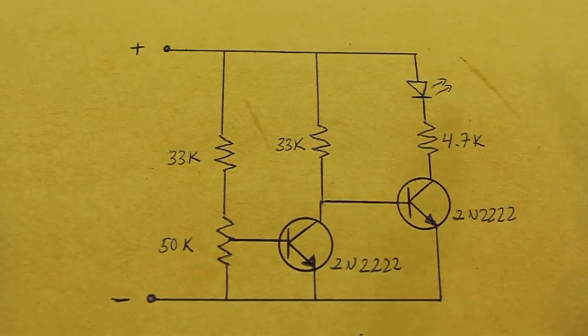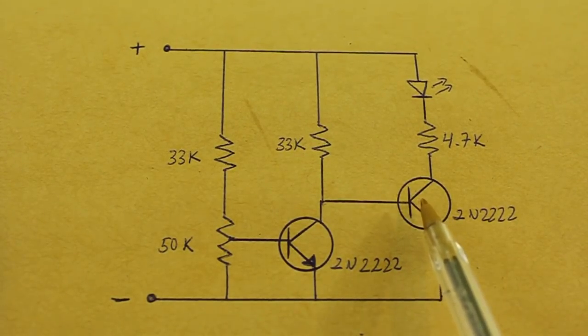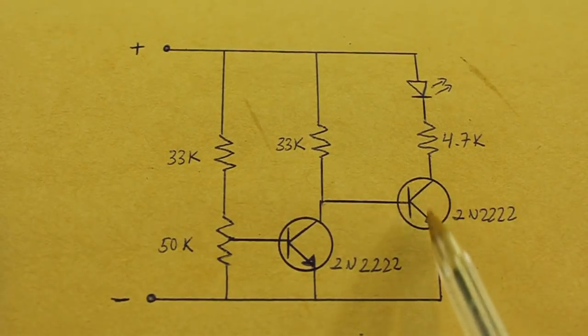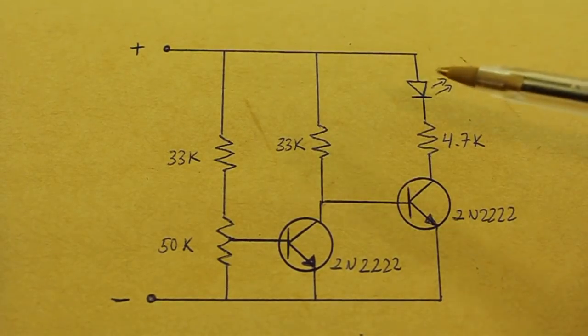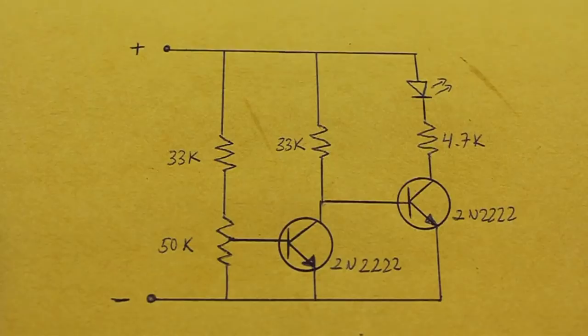The moment the voltage drops below 10 volts, this transistor turns off, the current flows to the base of the second transistor which turns on and therefore the LED will turn on.